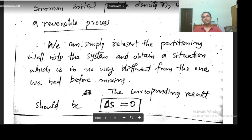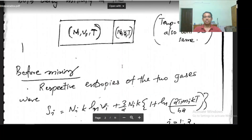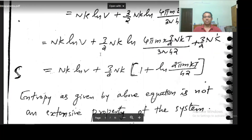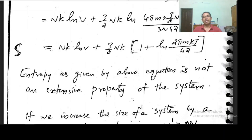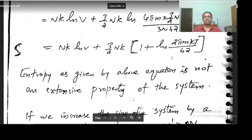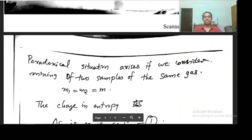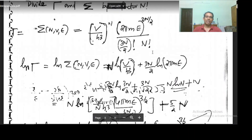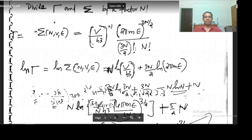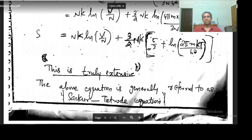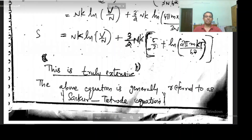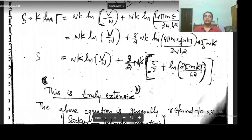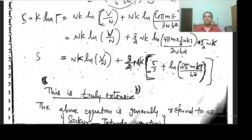In the earlier expression for entropy, we had only nk log(v), but here I have log(v/n). So when I divide sigma by n factorial, I get v/n here. The rest is the same, and this is actually extensive.